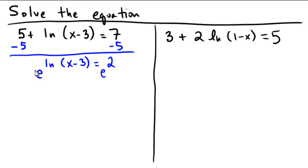This is going to have the advantage of canceling out the natural logarithm. So what would be left over? Looks like an x minus 3 equals e squared. And so the last step would be to add 3 to both sides, which would mean that x is equal to e squared plus 3.